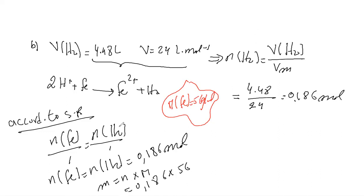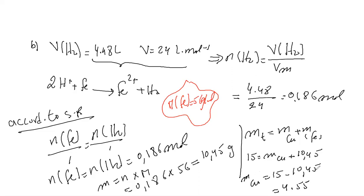Fe is 56 gram per mole. This equals ten point forty five gram. For the mixture, M total = M of Cu + M of Fe. 15 = M of Cu + 10.45, so M of Cu = 15 minus 10.45 = 4.55 gram.